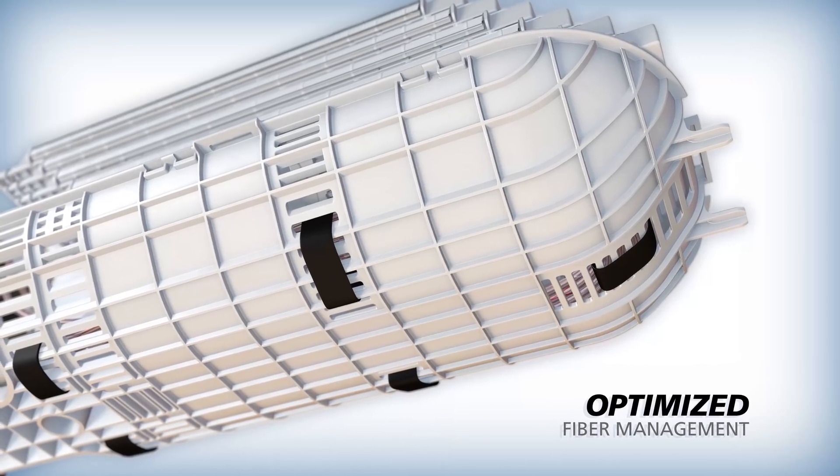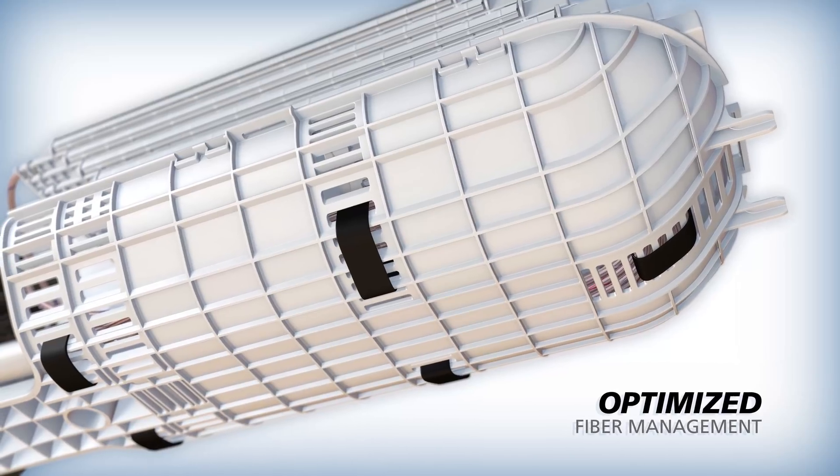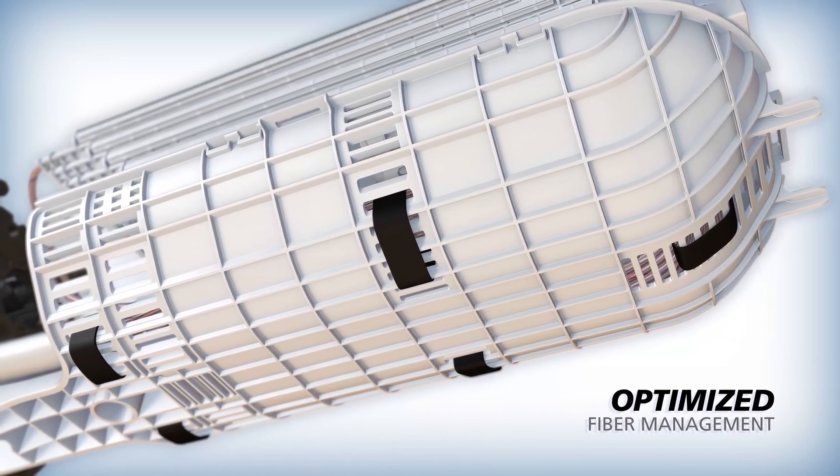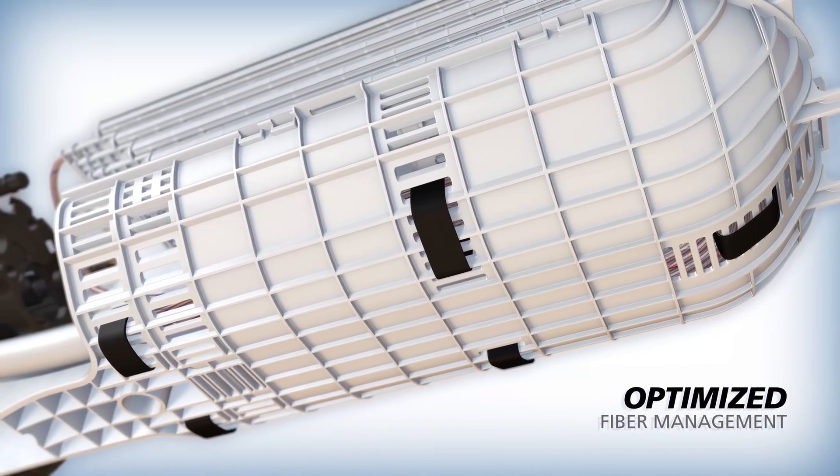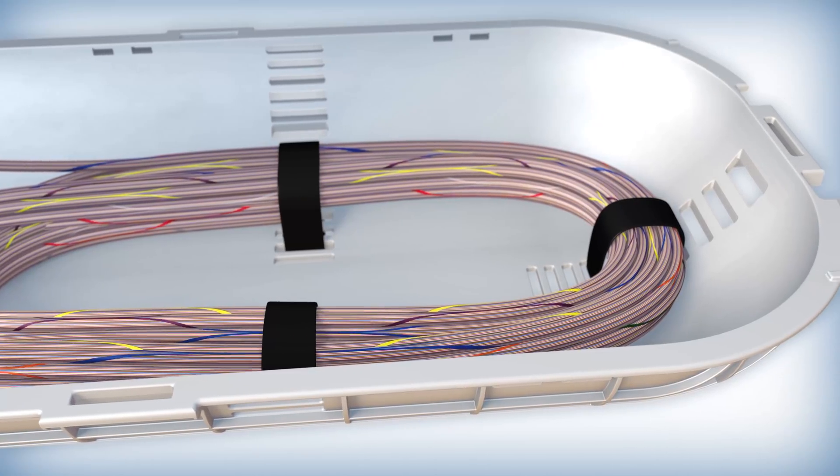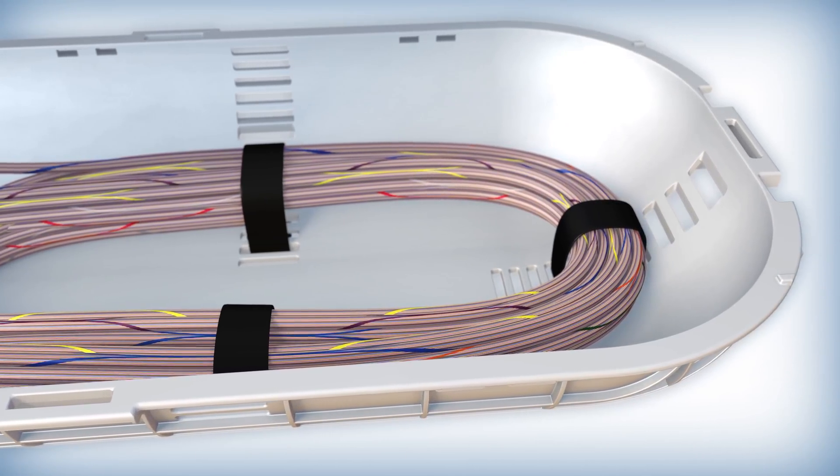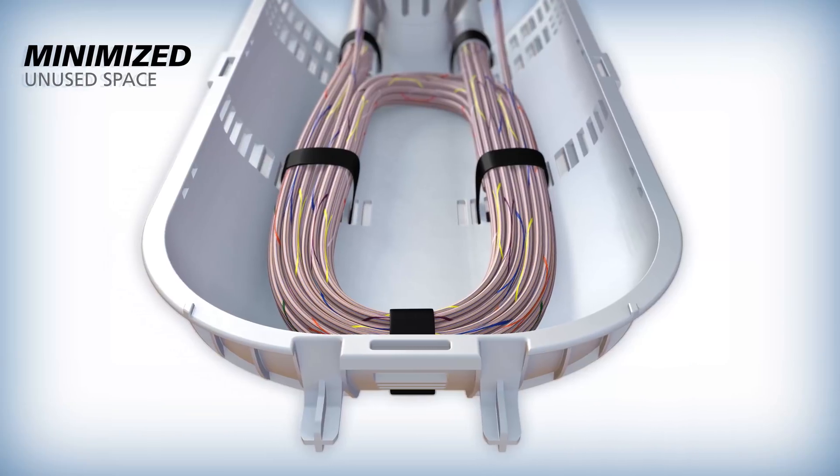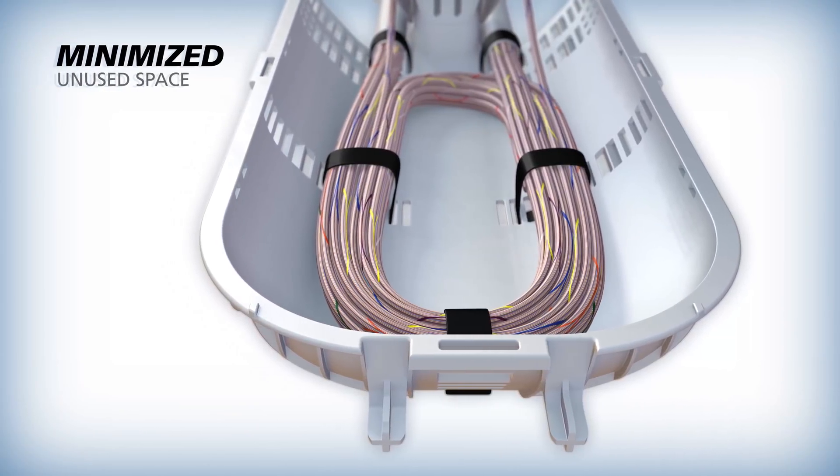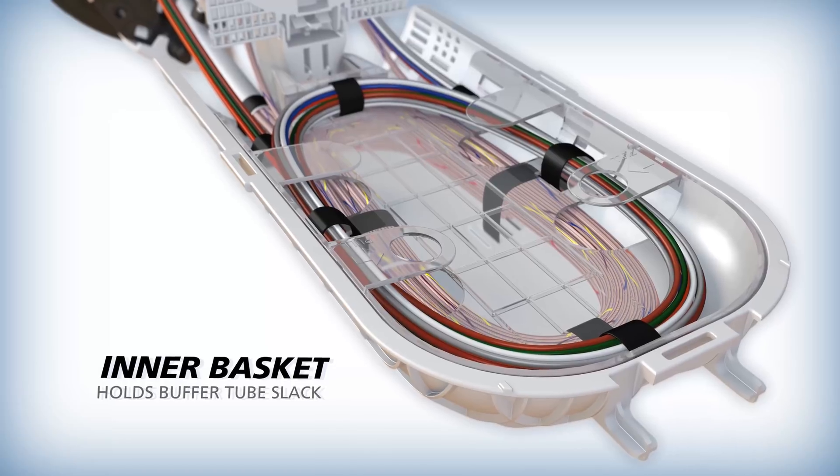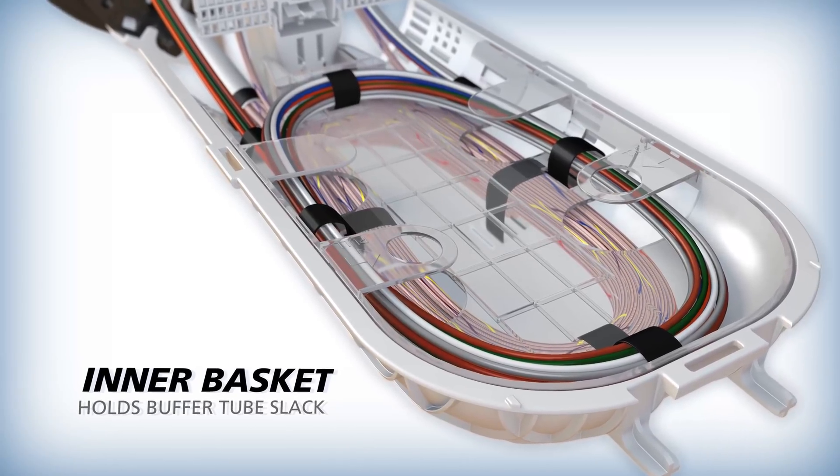To optimize fiber management, Apex closures have molded plastic baskets with no sharp edges or snag points and plenty of tie down points for buffer tubes or ribbon slack. The baskets are shaped to minimize unused space within the dome.